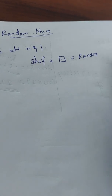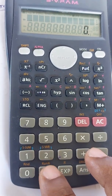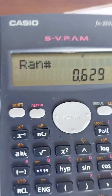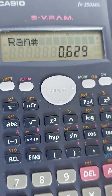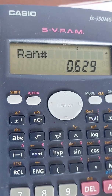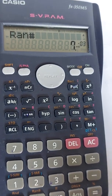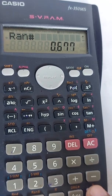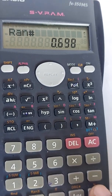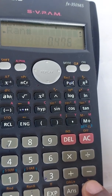Let us check what happens when you press this. Press Shift, dot, then equal to — it is generating something: 0.629. So this generates numbers between 0 and 1. Again, if you press equal to, another random number will be generated. You can keep pressing equal to and it will keep generating new numbers between 0 and 1.